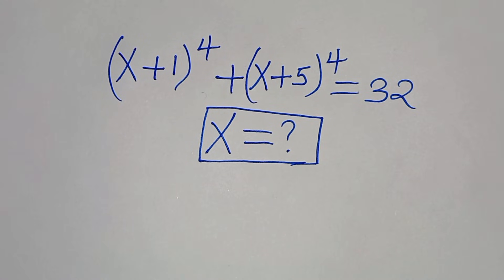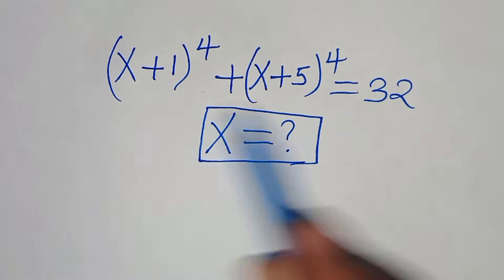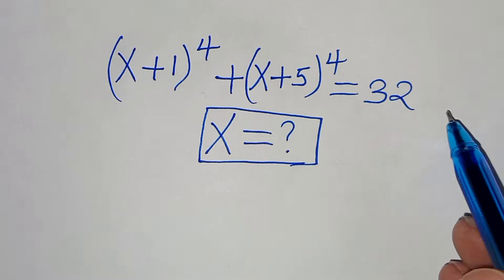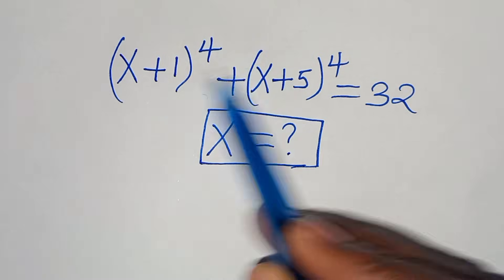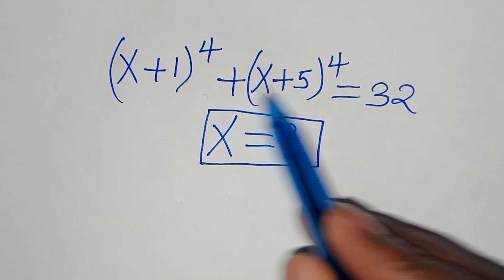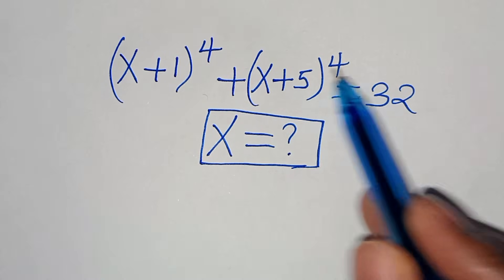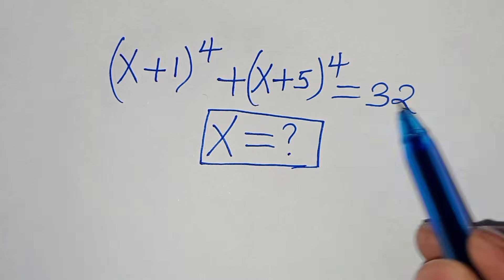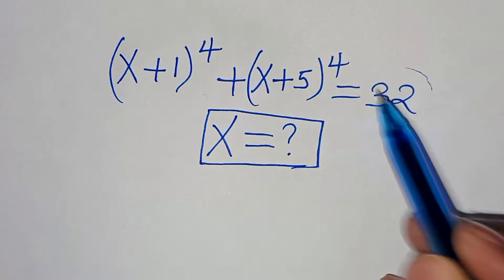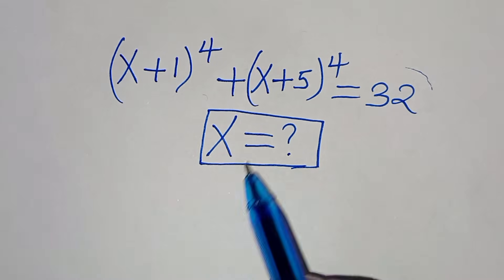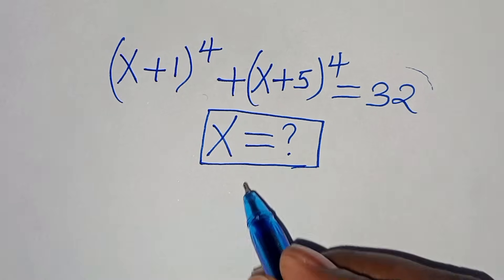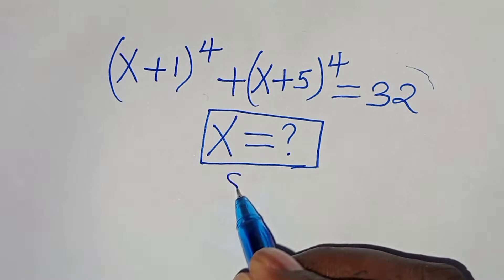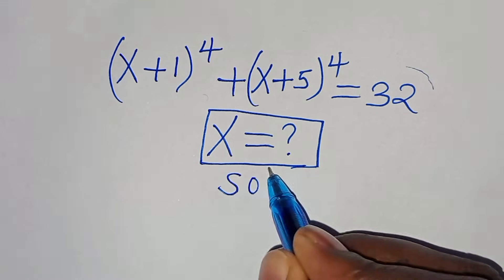Hello everyone, you are welcome to solve this nice algebra problem, which is x plus 1 to the power of 4 plus x plus 5 to the power of 4, this is equal to 32. So what are the values of x? Now let's provide a solution from here.